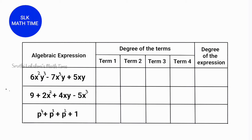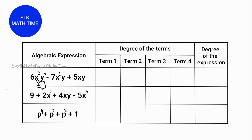So now let's look at an example. Here we have an algebraic expression and we are going to split it individually term by term, find the degree of each term, write it down, and compare to find the degree of the expression. Let's start with the first term: 6x²y³. Here both variables have exponents and since the variables are being multiplied, we have to add the exponents. So 2 + 3 = 5. The degree of term 1 is 5.